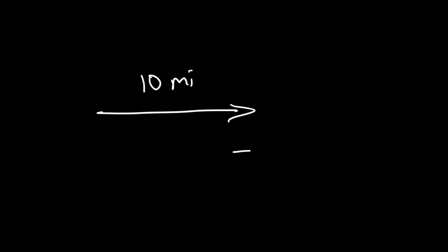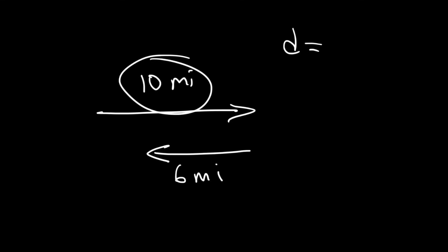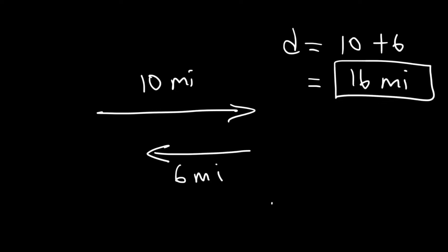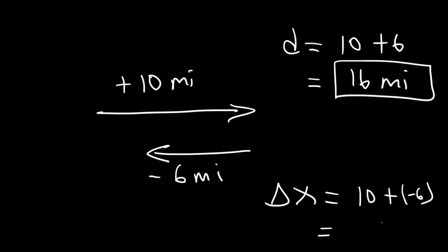Let's say a car travels 10 miles east and then 6 miles west. To calculate the distance, add the two numbers: 10 plus 6 equals 16 miles total. For displacement: the car traveled positive 10 miles to the right, then negative 6 miles to the left. So 10 plus negative 6 gives a net displacement of 4 miles to the right. The vehicle started at one point and ended 4 miles to the right — that's the net displacement.